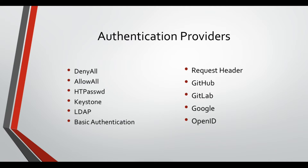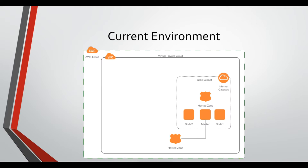This is the environment we currently have. We have created a Virtual Private Cloud to host our environment and we've created a public subnet with internet gateway attached to it. We have created three EC2 instances - one master and two nodes - and we had a hosted zone resolving our nodes internally within the public subnet, and a public hosted zone that resolves to our master node from the outside world.